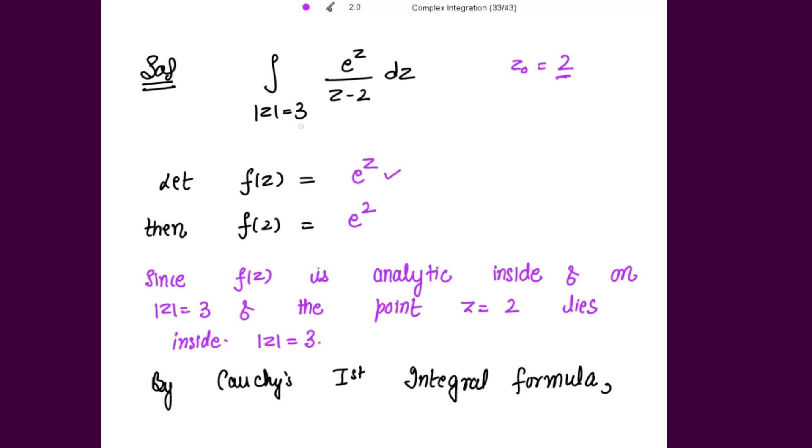Why? Because the circle has radius 3 and 2 is strictly less than 3, so 2 is lying inside the circle.